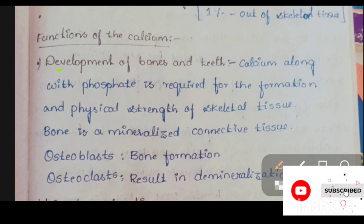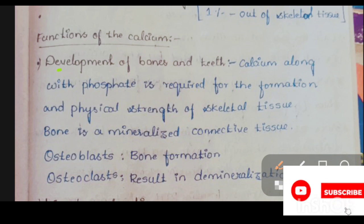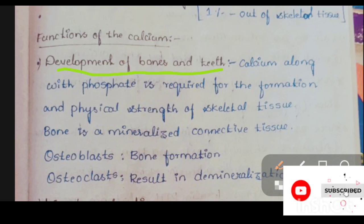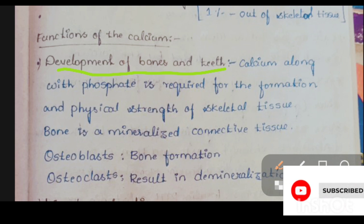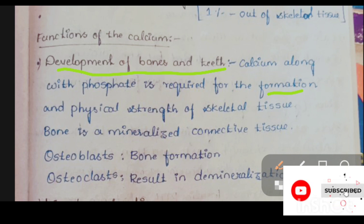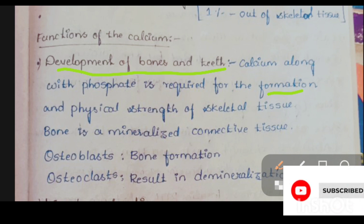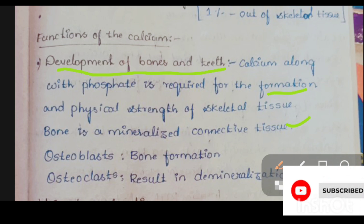The first most important function of calcium is the development of bones and teeth. Calcium along with phosphate is required for the formation and physical strength of the skeletal tissue. Bone is a mineralized connective tissue, mineralized with calcium and phosphorus.